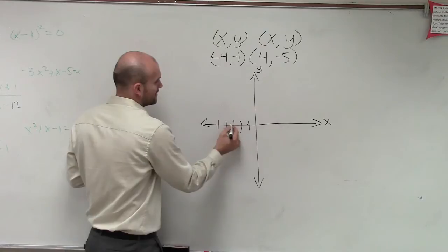If I was going to plot these on a graph, remember the first coordinate is your x. That tells you where to go on your x-axis. 1, 2, 3, 4, 5. So I go down to negative 4, and then down 1 to negative 1.